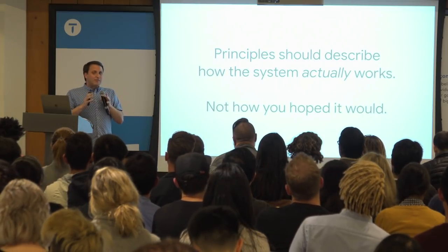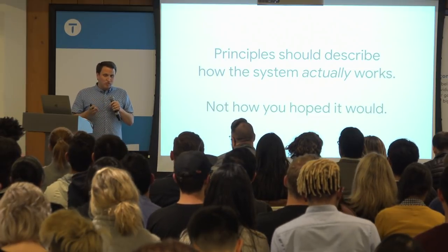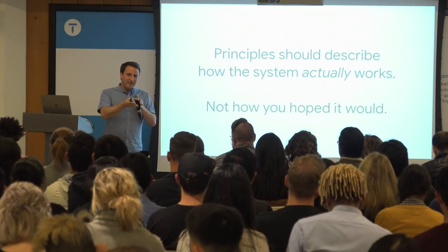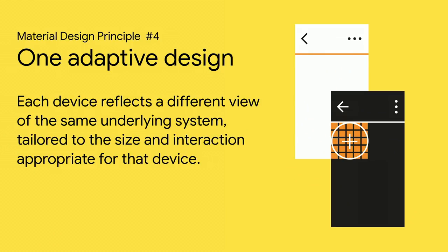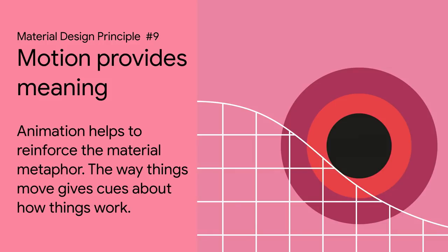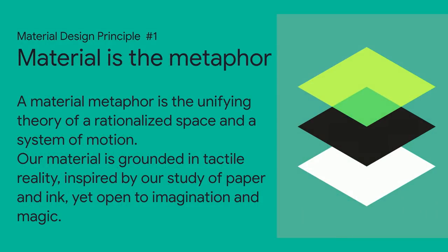You may have ideas at the beginning — themes you know you're going to focus on. For us, we knew we wanted one adaptive design working across all different systems, and to be suitable across platforms. But we didn't know at the start how important a role motion design was going to play within material. Motion providing meaning was an idea we anchored to partway through the gestation process. And even the first principle — that material is the metaphor — is something we only recognized as we built this.